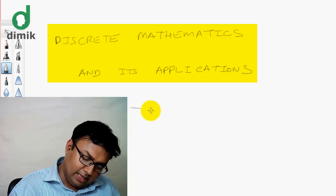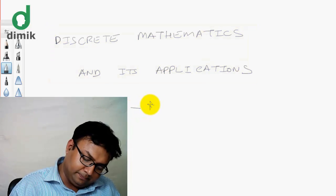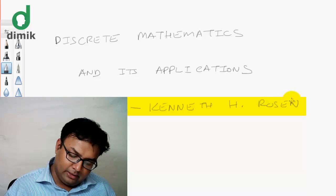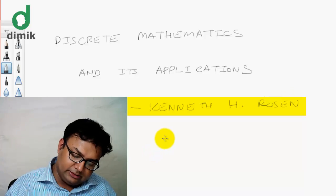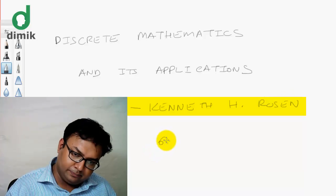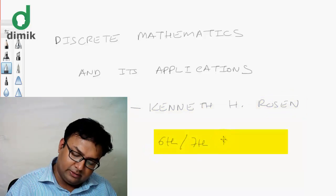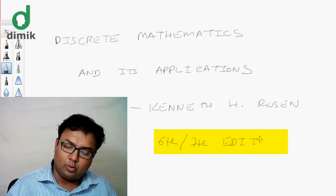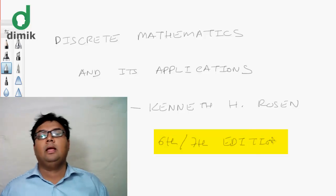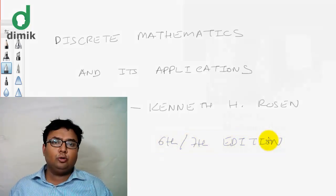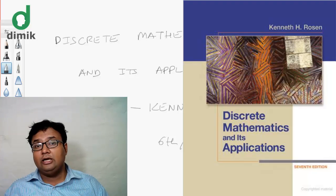The author is Kenneth H. Rosen. We are using the sixth edition. We have made this sixth edition available, and we will try to avoid the 7th edition.